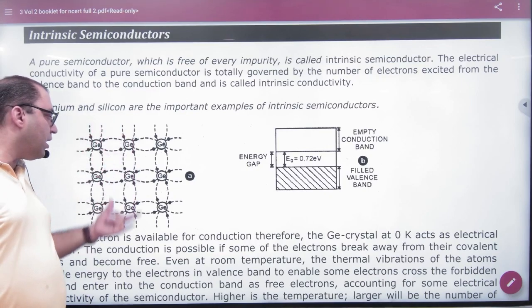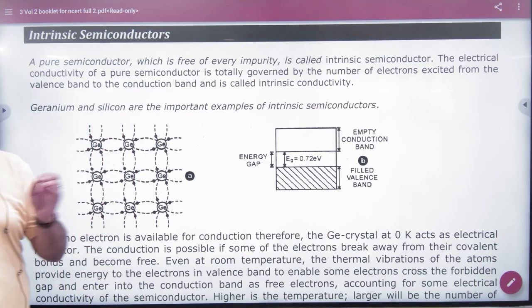Pure semiconductor means that all atoms are in germanium, so it will remain in germanium. If it is silicon, it will remain in silicon.